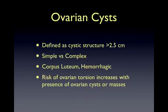Ovarian cysts are defined as cystic structures of the ovary measuring 2.5 centimeters or greater. They may be simple thin-walled fluid-filled follicular cysts, or they may be complex with thick wall septations or heterogeneous material within them. Corpus luteum and hemorrhagic cysts are two kinds commonly seen and will be discussed in the following slides. Keep in mind that the risk of ovarian torsion increases with the presence of ovarian cysts or masses.